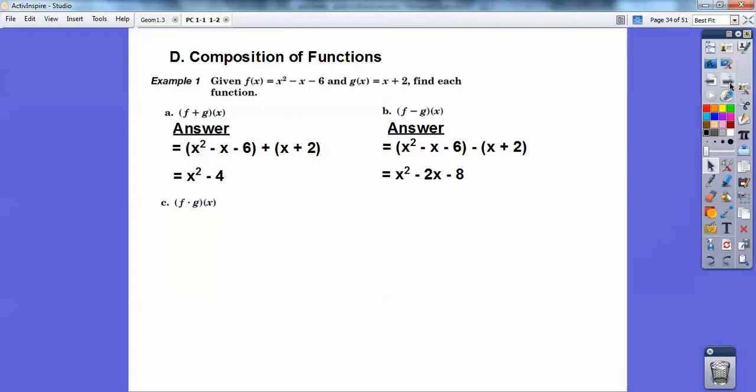All right, f times g of x. So you're going to multiply them. So what I'm going to do is do the claw method. I'm going to do this x all the way through, x times x squared, x times negative x, and x times negative 6. And then do the 2. 2 times x squared, 2 times negative x, 2 times negative 6. And then combine like terms. And there you can see I did the x in red and I did the 2 in blue. And then I just combined like terms and I got that's my answer.